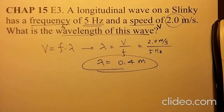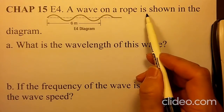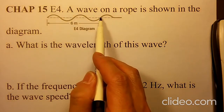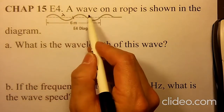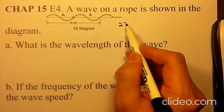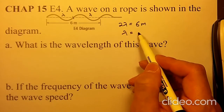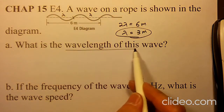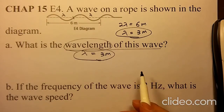Thank you and bye now. Let's solve chapter 15 E4. A wave loop is shown in the diagram. One full wave and two full waves becoming 6 meters. One full wave we call lambda and another full wave as lambda, becoming 2 lambda equals 6 meters. Then lambda equals 3 meters as your wavelength.